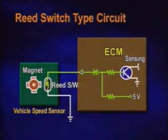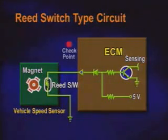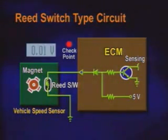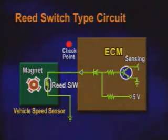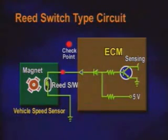As for the sensor check, check for current data outputs depending on the wheel speed. If the data doesn't output or the wrong speed outputs, check the on and off voltage at the terminal.